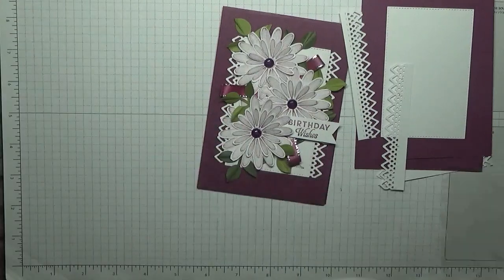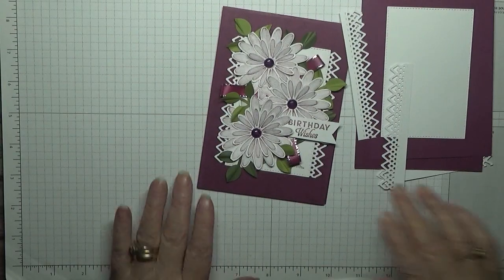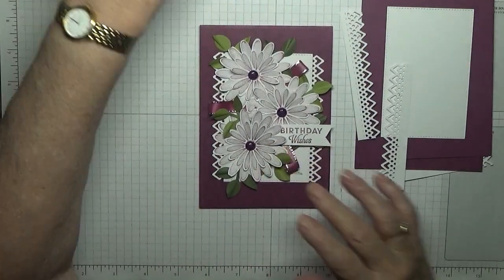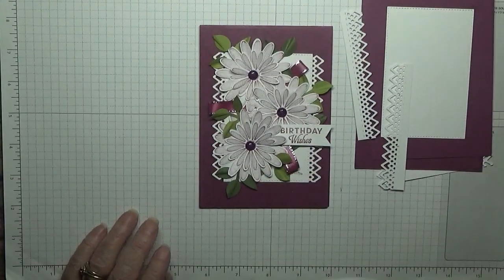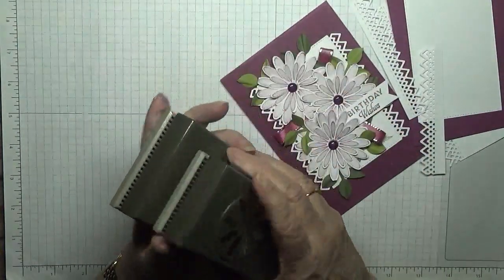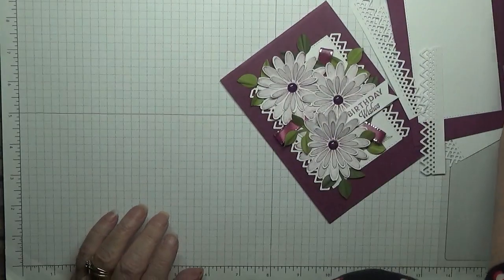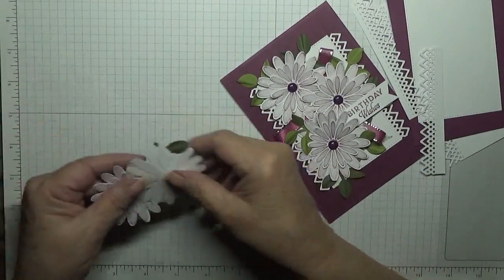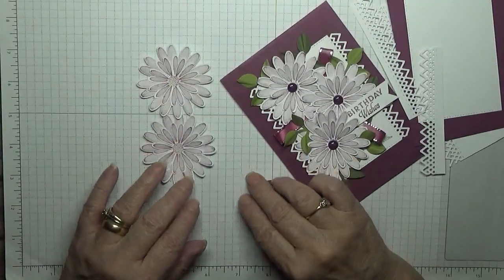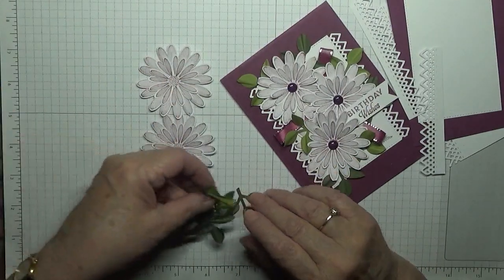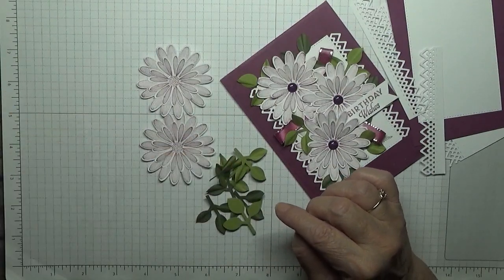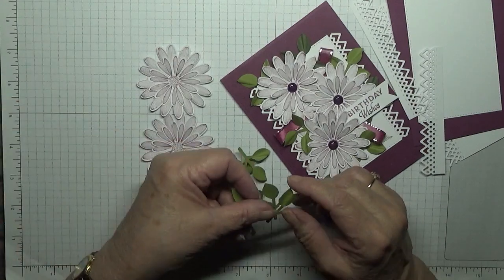I'll stick that either side of the rectangle and this bit we'll use to stamp birthday wishes on. Now the flowers, we're using the punches, the large and the small daisy punch. I have done two flowers like that. I've also punched all the leaves out. These leaves I have actually had in my box.